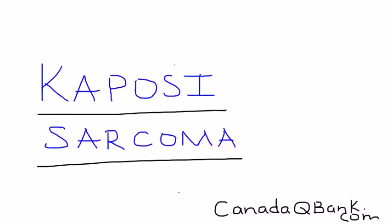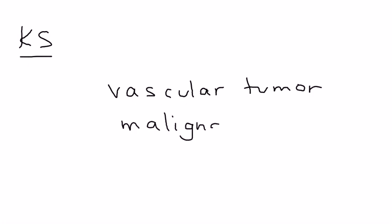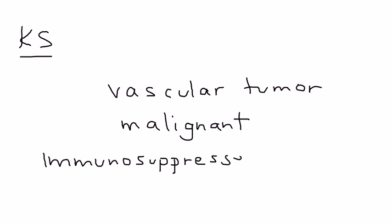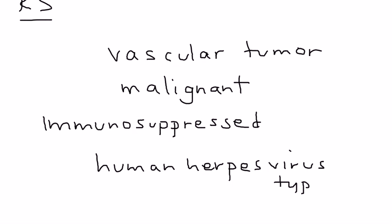Kaposi sarcoma, abbreviated KS, is a vascular tumor. This tumor is malignant and most commonly occurs in patients who are immunosuppressed. When an immunosuppressed patient is infected with a certain virus, they will most likely develop Kaposi sarcoma. That virus is human herpes virus type 8, abbreviated HHV8.